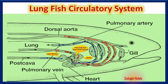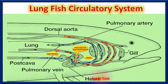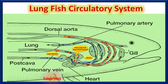Now understand the double circuit circulation in lung fishes. The first circuit — called pulmonary circulation — completes when deoxygenated blood from the sinus venosus moves to the lungs and comes back to the sinus after oxygenation. The second circuit — called systemic circulation — completes when oxygenated blood from the sinus venosus moves to body parts through the dorsal aorta and returns to the sinus venosus after deoxygenation.